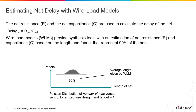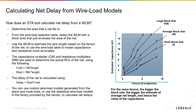The wire load models are calculated based on the average statistical net length over many designs. A Poisson distribution such as what's shown here is used to determine the average net length for nets in a certain block. Average statistical net lengths determine the corresponding resistance and capacitance, and thus you calculate the delay of that net. These statistically weighted net lengths make the wire loads pessimistic and might be unreliable for some designs, but they provide a good estimate and could be used as a starting point for synthesis or critical path analysis. In the graph, notice that larger block sizes and larger fanouts have larger capacitances, and thus larger delays.